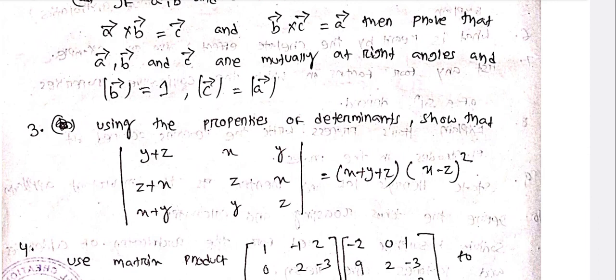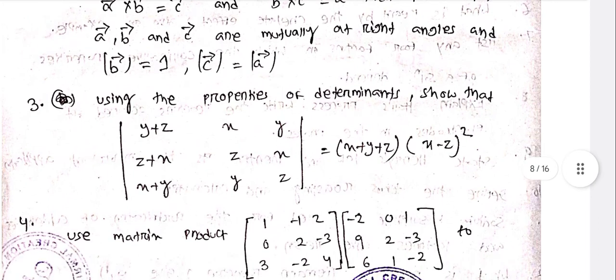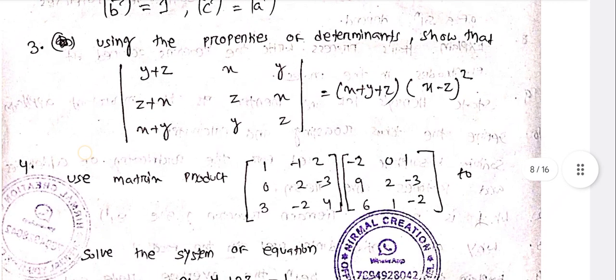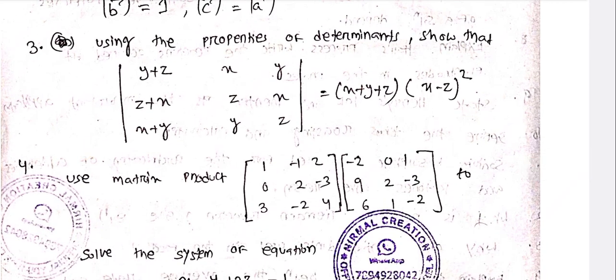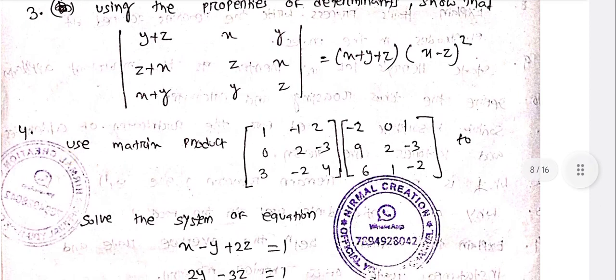then prove that vectors a, b, and c are mutually at right angles and |b⃗| = 1, |c⃗| = |a⃗|. Using properties of determinants, show that the determinant with elements (y+z, z+x, x+y), (x, z, y), (y, x, z) equals xyz(x-z)².